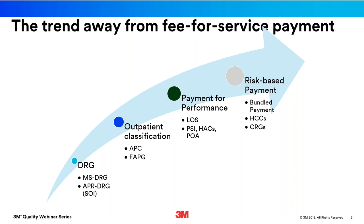Starting back in 1983, DRGs — diagnosis-related groups — were introduced by CMS. It was the very first prospective payment system, with a major goal of controlling rising costs of care. With the success of the DRG system, in 2000 CMS introduced ambulatory payment classifications, known as APCs. This came as a response to a large shift to outpatient services, and the need to control costs for outpatient services.